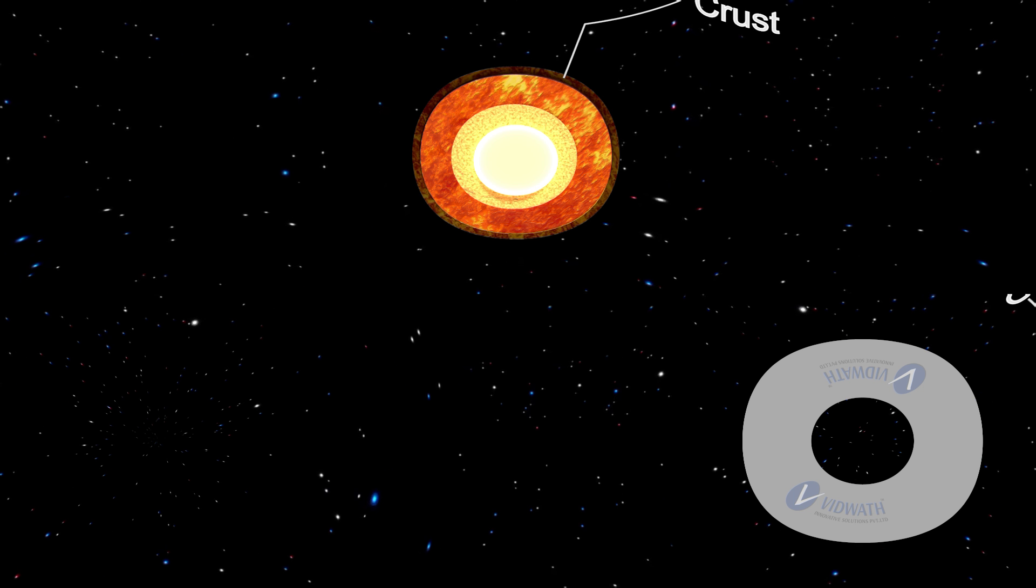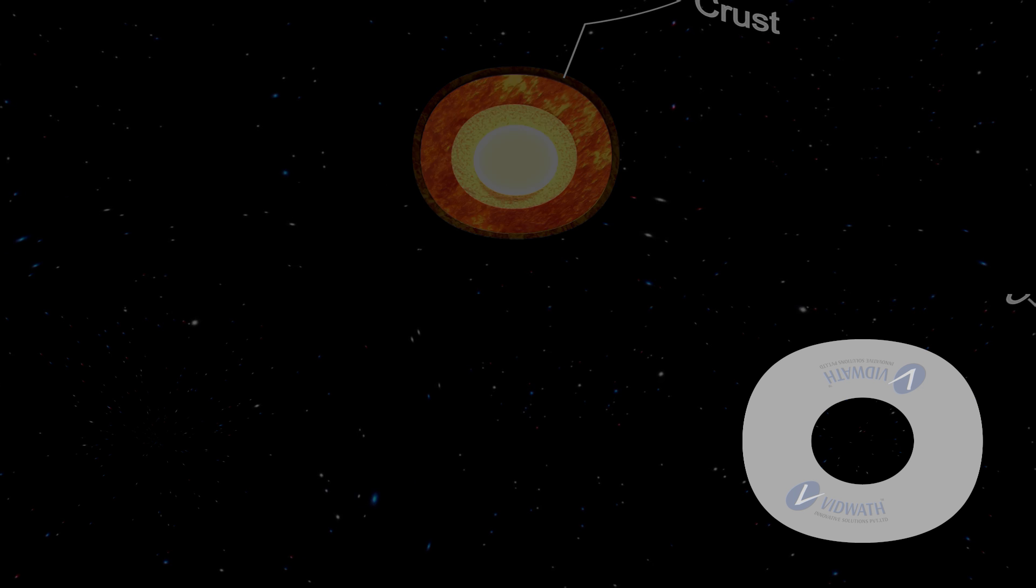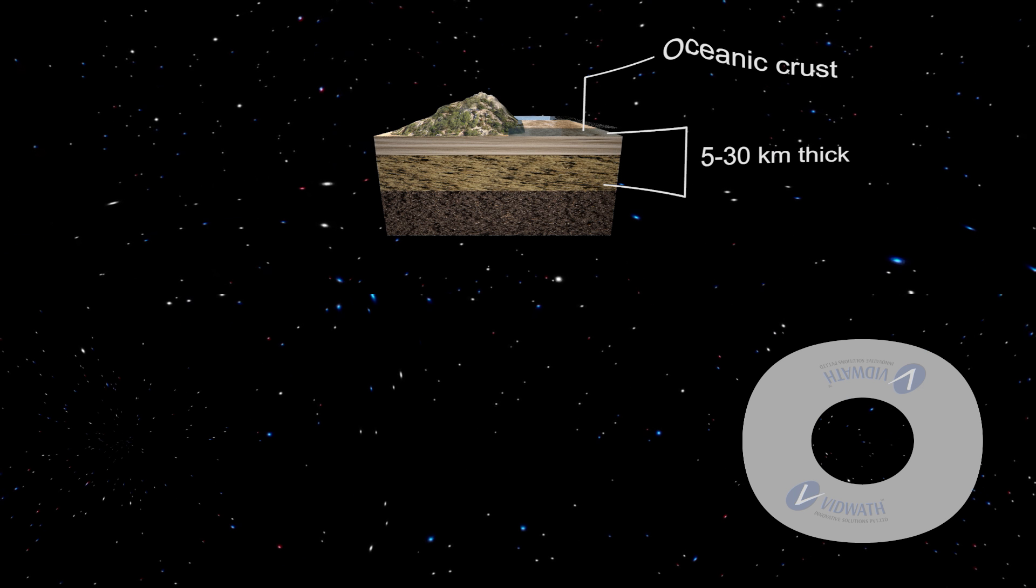Earth's layers, the crust. Crust is the outer thin layer with a total thickness ranging from 30 to 50 km. It consists of various landforms like mountains, plateaus, and volcanoes.